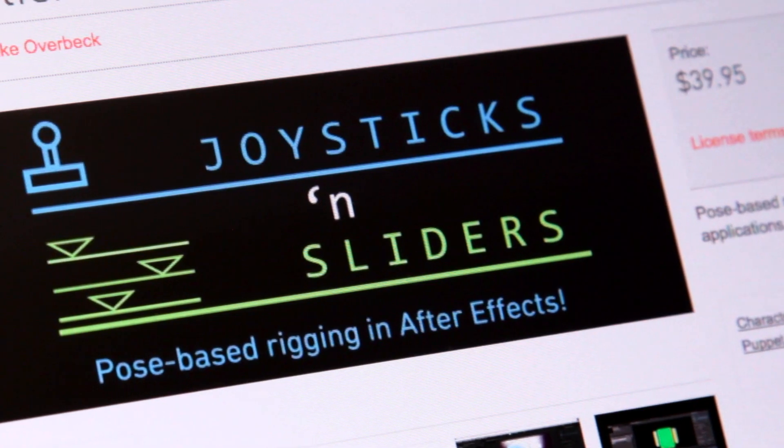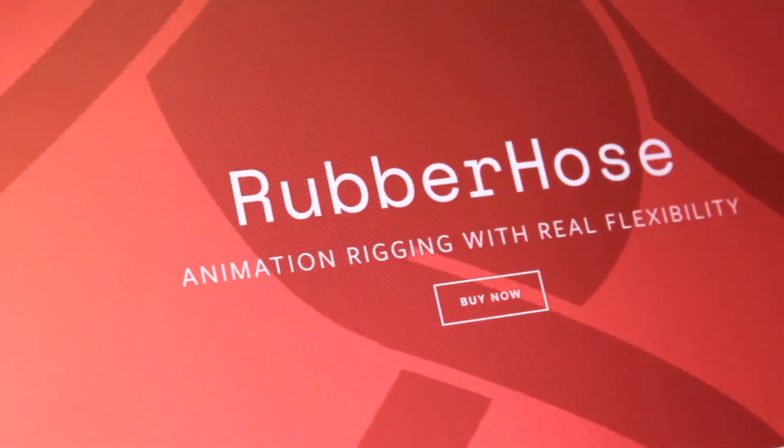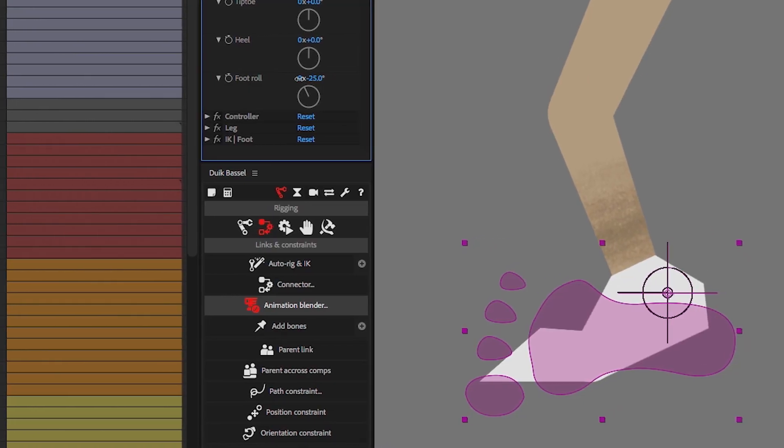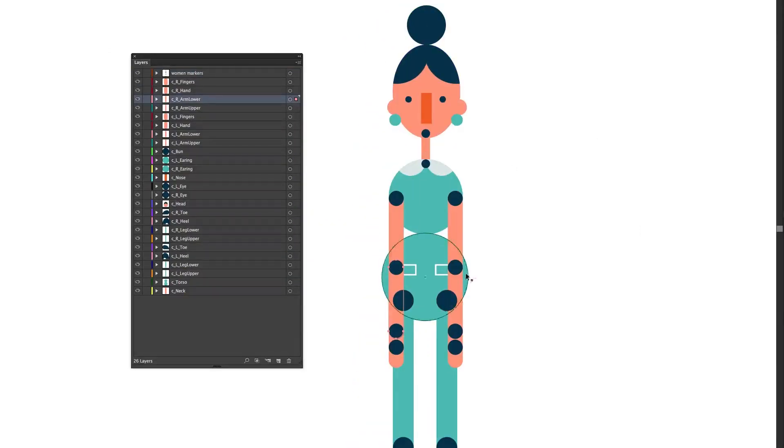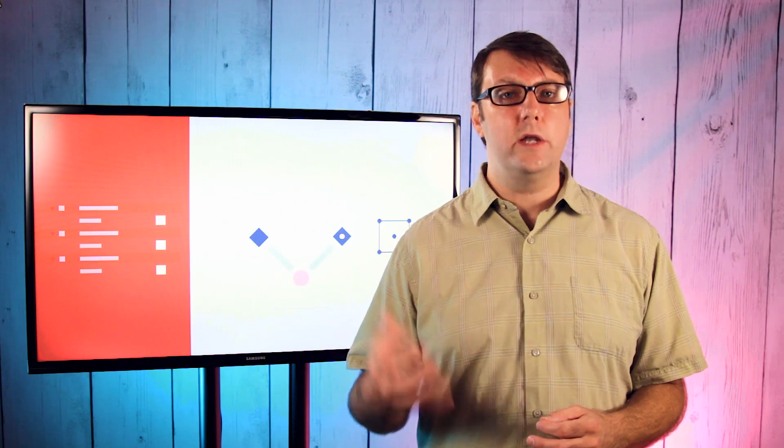But which rigging tool should you use for your particular character? What sort of leg rig should you build? Do you need IK? How about the facial animation? How should you prep the artwork before you get started rigging? And what should a good character rig even be able to do?